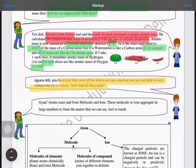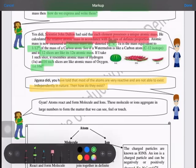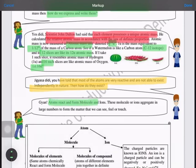The next question is: if the atoms are very reactive and it is impossible for most of the elements to exist in atomic form, then how do they exist in nature? Gyan says that atoms react to form molecules and ions, and these molecules or ions aggregate in large numbers to form matter.